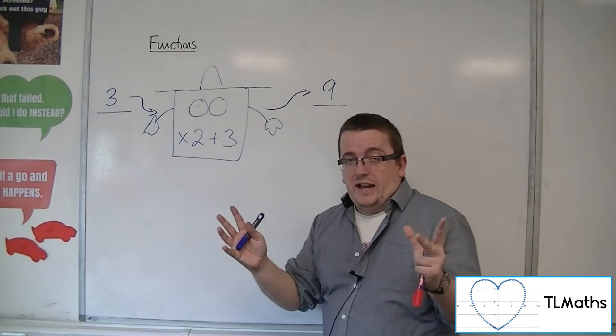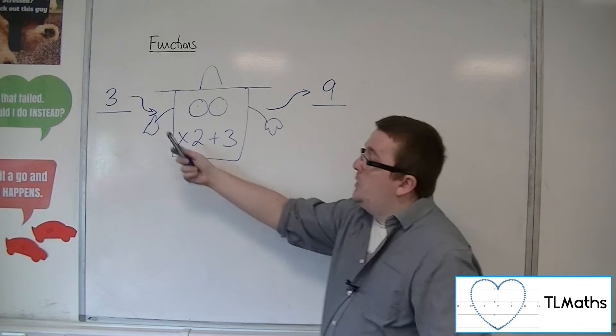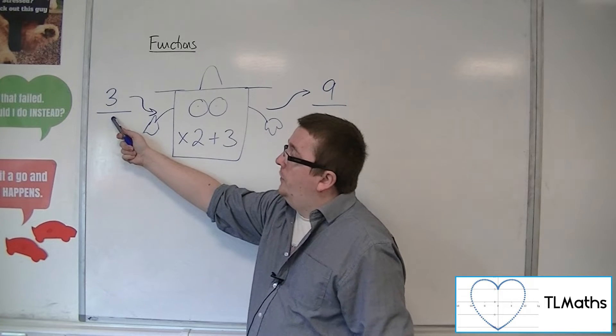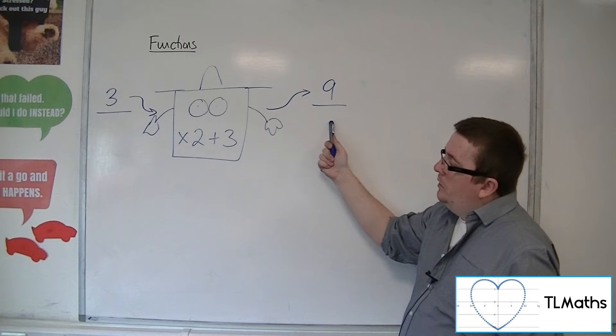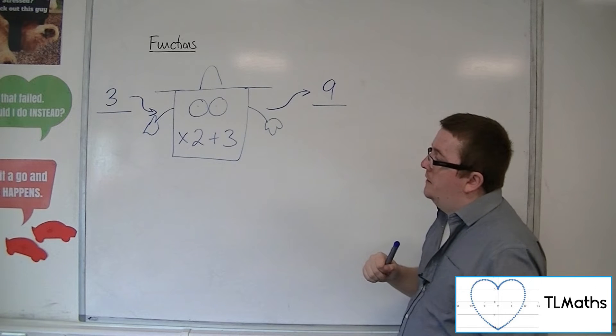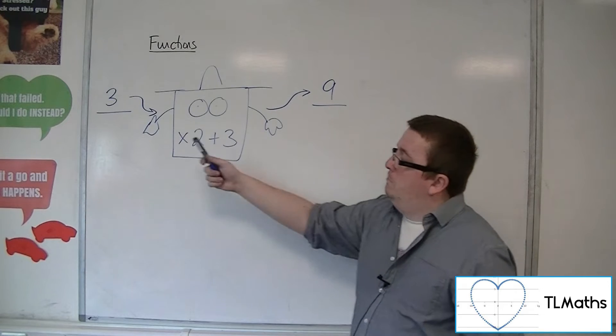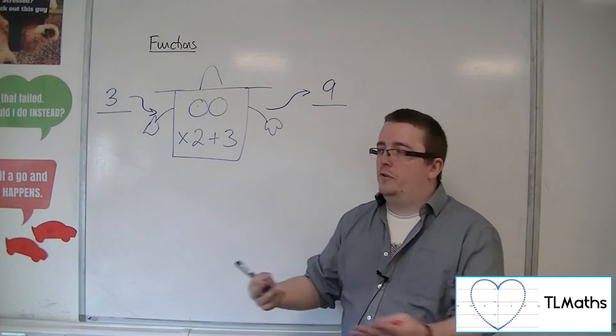Now, in this case there isn't. In the case of times 2 plus 3, there is only one value of x that I can substitute in to get to 9 in this case. But potentially you could have a function there that has multiple values of x that gets you one value of y, like x squared, for example.